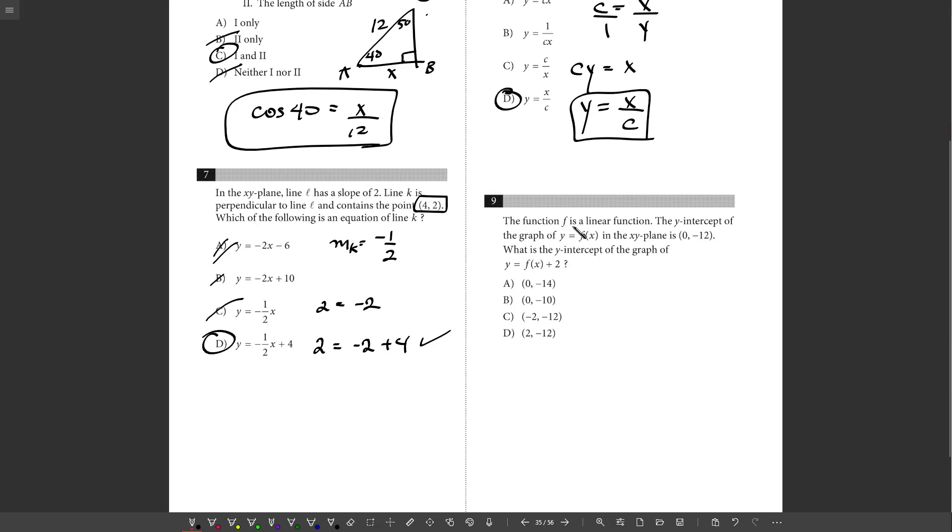Nine, the function F is a linear function. The y-intercept is that. What is the y-intercept to the graph of F of X plus 2? Okay. So we have some line, Y equals MX plus B. But I know that this line is Y or F of X equals MX minus 12 because I know that's the y-intercept. So this is equal. I'll just call this F of X, actually.